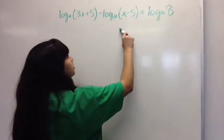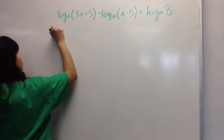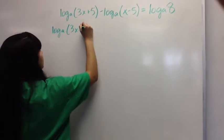Log to the base a of 3x plus 5 minus log to the base a of x minus 5 equals log to the base a of 8.